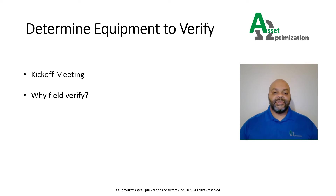Although the owner users are familiar with their units, there are times when there are MOCs or changes in the field. For example, equipment removals or abandoned-in-place vessels might not be reflected on the list. Field verification is used to identify these vessels so that they can be removed from the list. It makes for a more accurate RBI program and eliminates collecting data on equipment that will not be in scope.